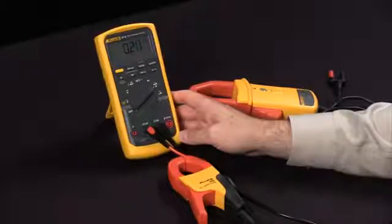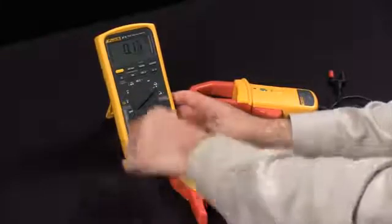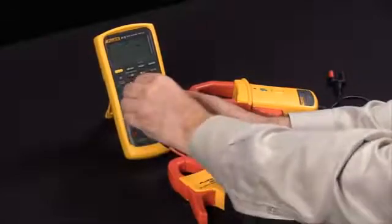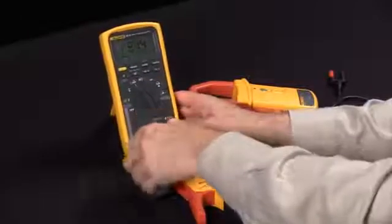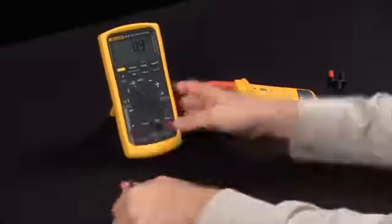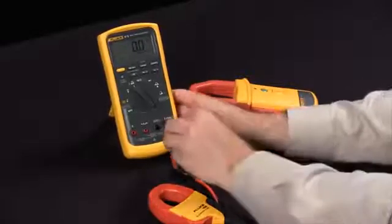When you're measuring AC and DC it's a little different setup, so what you want to do is set your meter to millivolts, unplug the jacks, and in this case you're going to go into your voltage as well as your common inputs.